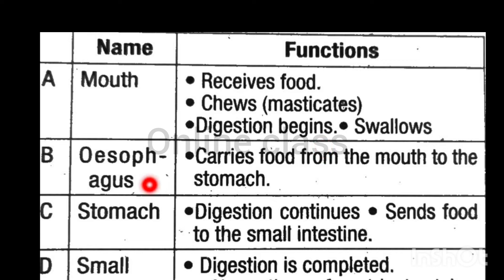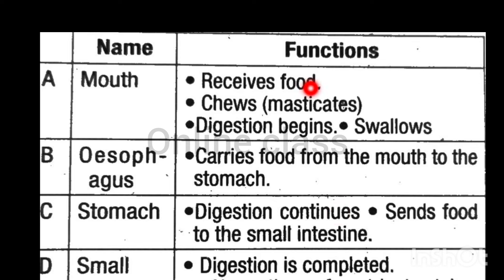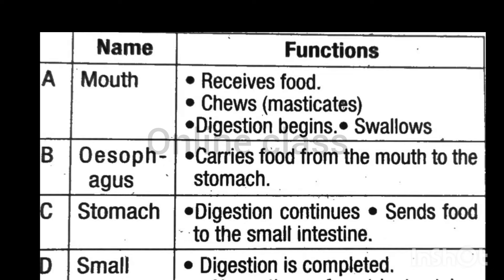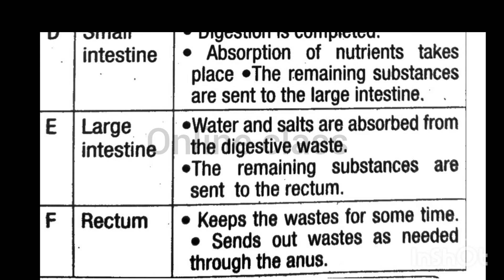The esophagus carries food from the mouth to the stomach. In the stomach, digestion continues and food is sent to the small intestine. In the mouth, digestion begins. In the small intestine, digestion is completed.